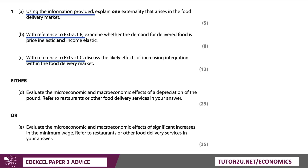Notice that in each question it says 'using the information provided', 'with reference to extract B', 'with reference to extract C'. What I would do in the exam is underline when you are using applications — simply saying 'figure one shows' or 'extract B shows'. Underline 'extract B' to highlight to the examiner, to flag to your marker that you're trying to get the application marks.